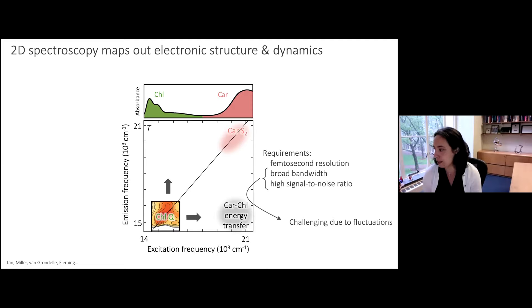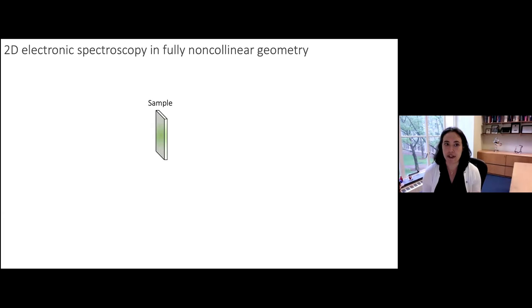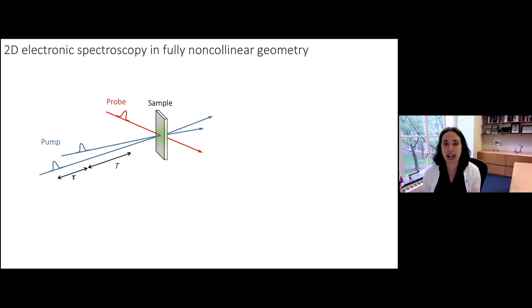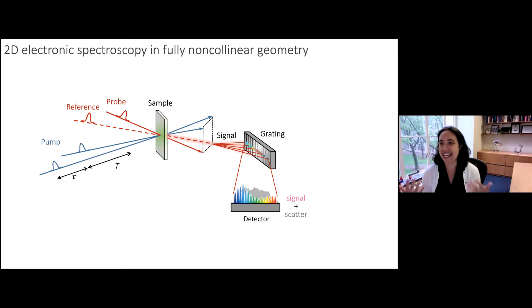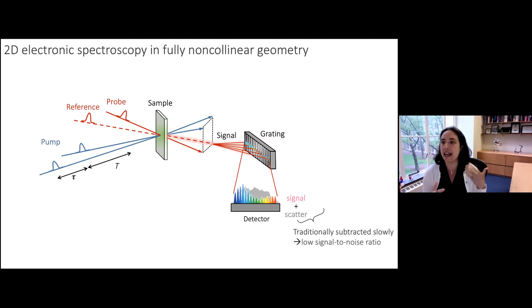We do 2D spectroscopy in the fully non-collinear geometry, which leads to generation of our signal in a spatially separated, background-free direction to get high sensitivity. But along with detection of the signal, we often detect scatter. Traditionally that scattering component is removed through slow subtraction, which means many fluctuations in the laser system aren't fully subtracted.